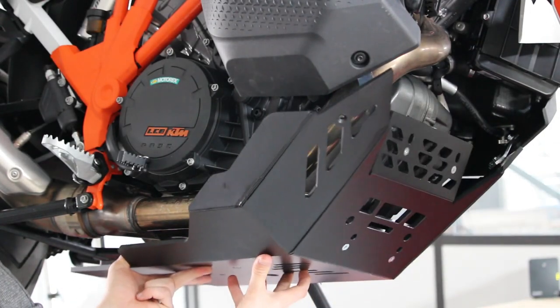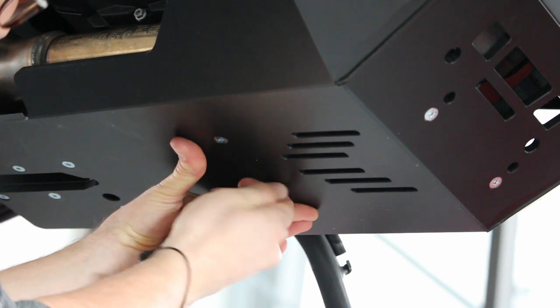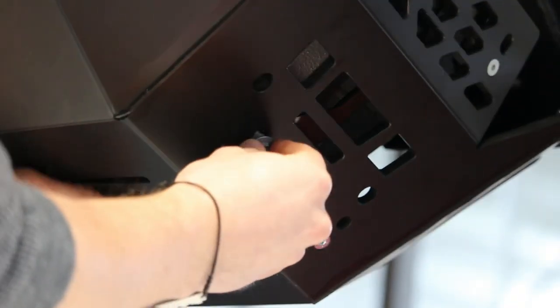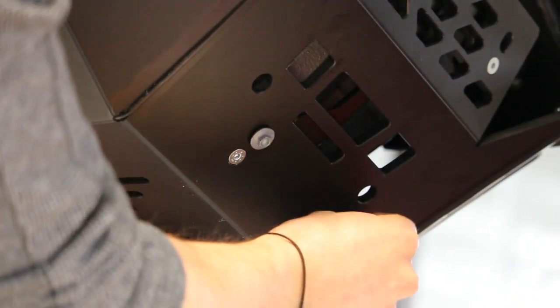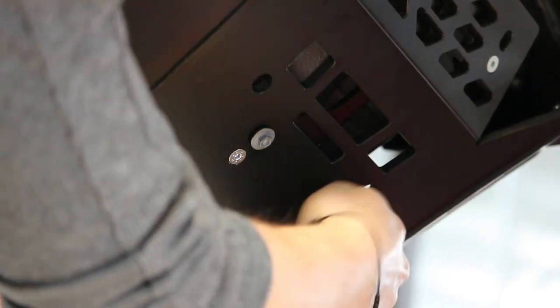Now it's time to put the skid plate in place. First, we will put the center screw, then the four bolts at the front of the skid plate.